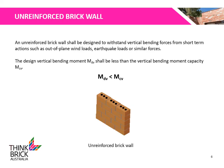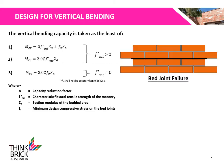An unreinforced brick wall shall be designed to withstand vertical bending forces from short-term actions such as out-of-plane wind loads, earthquake loads, or similar forces. The design vertical bending moment, MDV, shall be less than the vertical bending moment capacity, MCV. The vertical bending capacity shall be taken as the minimum of three equations, where phi is the capacity reduction factor, F-MT is the characteristic flexural tensile strength of the masonry, ZD is the section modulus of the bedded area, and FD is the minimum design compressive stress on the bed joints. The first two equations apply where the characteristic flexural tensile strength is greater than zero, and the third where it is zero. The minimum design compressive stress FD shall not be greater than 0.36 MPa.